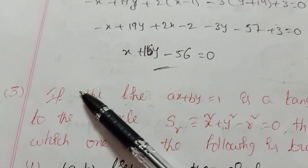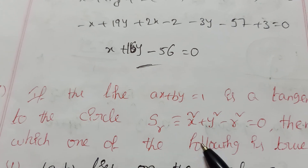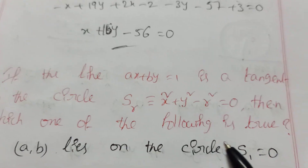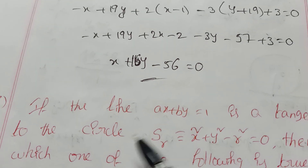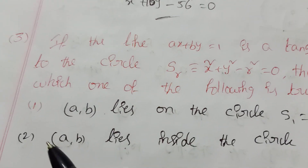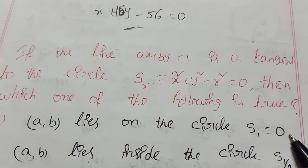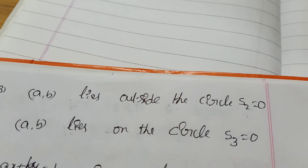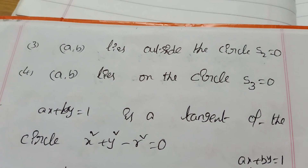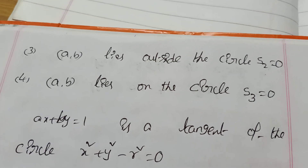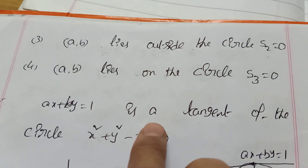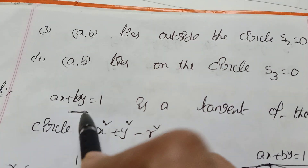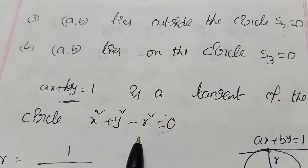Third question: if the line ax + by = 1 is a tangent to the circle x² + y² − r² = 0, then which of the following is true? Options: (A) (a, b) lies on circle s₁ = 0; (B) (a, b) lies inside s½ = 0; (C) (a, b) lies outside s₂ = 0; (D) (a, b) lies on s₃ = 0.